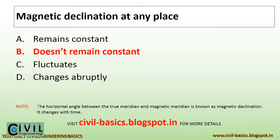The horizontal angle between the true meridian and magnetic meridian is known as magnetic declination. Magnetic declination at any place doesn't remain constant; it changes with time.